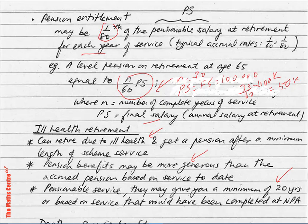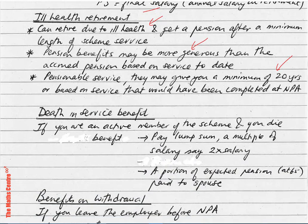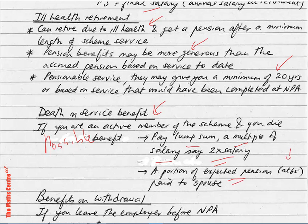Now let's move to death in service benefits. If you are an active member of the scheme and you die, the possible benefits are: a lump sum that is a multiple of your salary — say, two times your last salary drawn — so if you earned 40,000, they give you 80,000 as a lump sum. Or a portion of the expected pension at age 65 will be paid to your spouse.